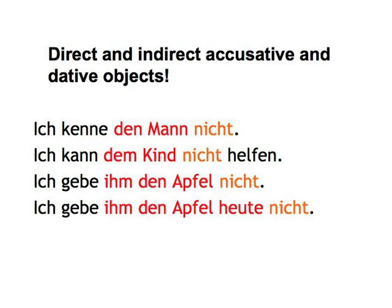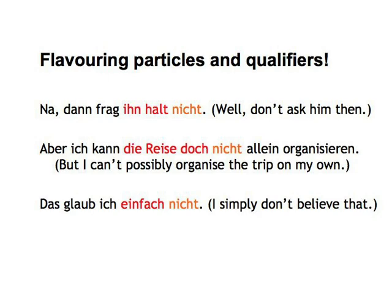Two: direct and indirect objects in the accusative and dative, and combinations thereof. In the last sentence, we have both a direct and indirect object plus a specific expression of time, with all three of them thus preceding the nicht. Three: flavoring particles — doch, ja, halt, eben — and words qualifying the nicht, like einfach nicht (simply not), wirklich nicht (really not), sicher nicht (certainly not), bestimmt nicht (most certainly not), noch nicht (not yet). You'll find some of these in our dialogue.